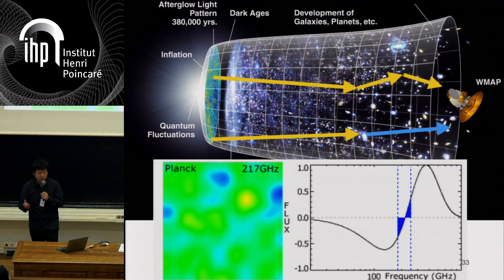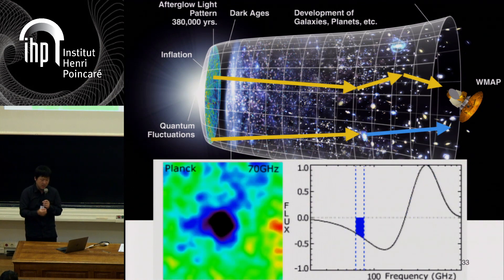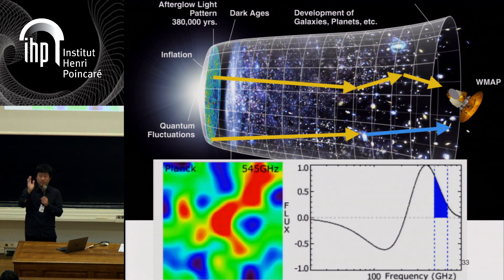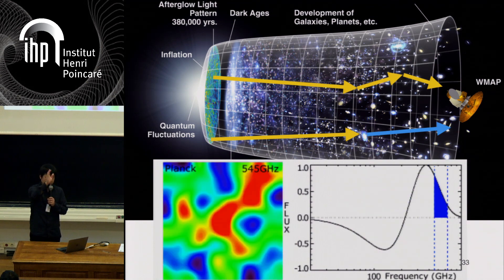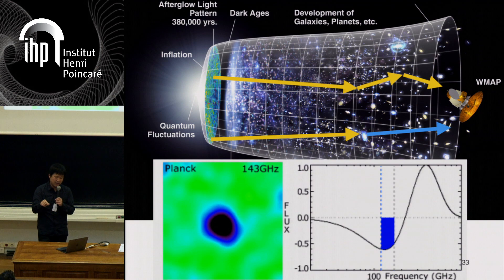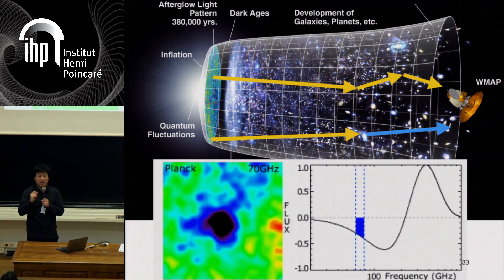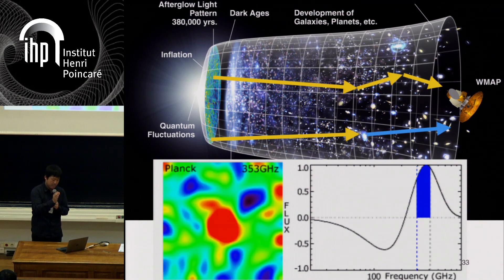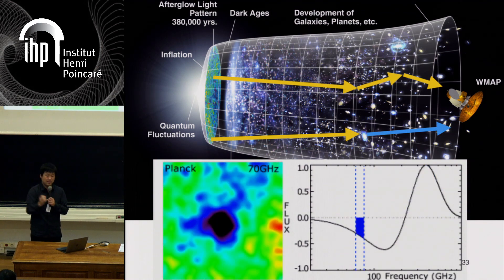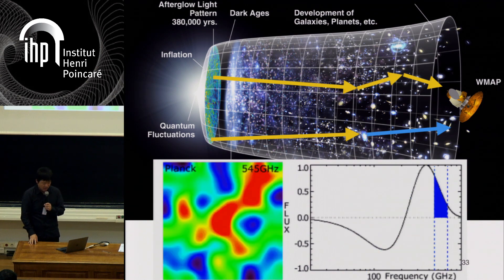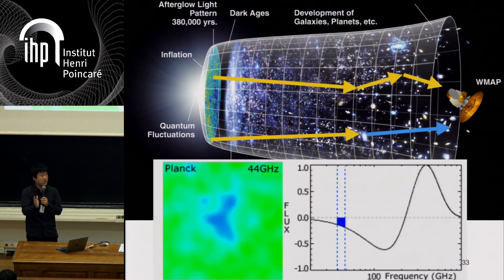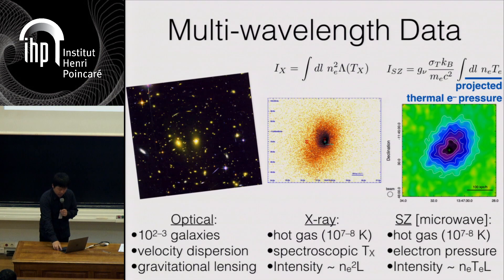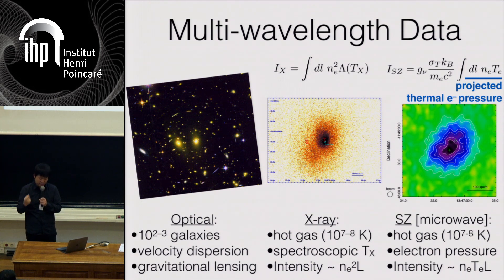The Sunyaev–Zel'dovich effect: when CMB photons from the last scattering surface come to us, they experience two things. First is deflection by gravitational lensing from matter in the universe. Second, when CMB photons hit hot gas in a galaxy cluster, their energy is upscattered — at low frequencies there is a dip, a deficit in flux, and at higher frequencies there is an increment. There is a very unique frequency spectrum which you can use to discriminate between SZ and other things to create a map of SZ. This multi-wavelength data already shows you that you can do cross-correlation: between SZ and X-ray, between optical and SZ, everything.